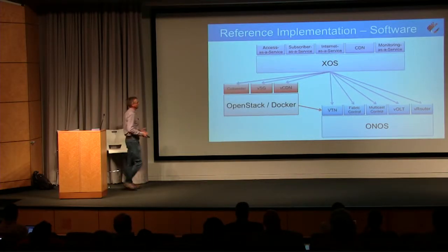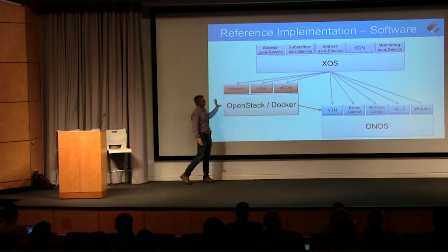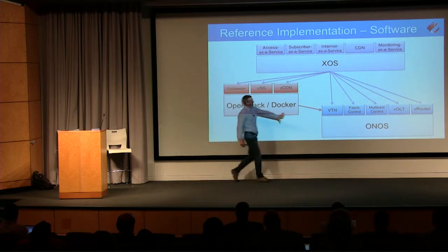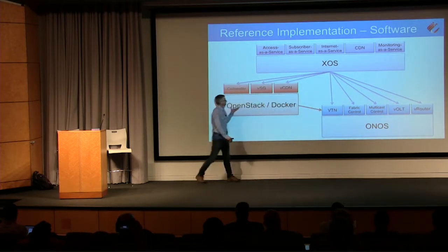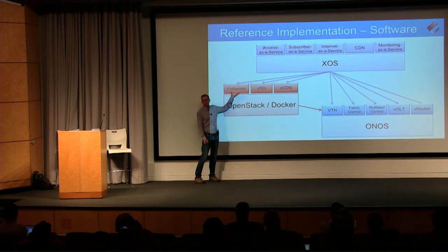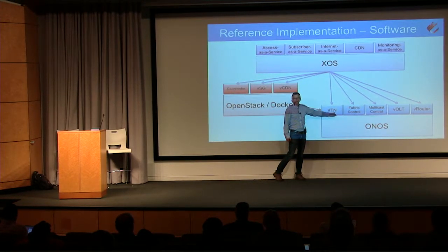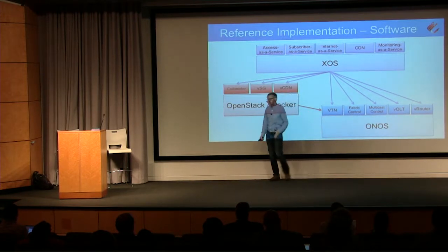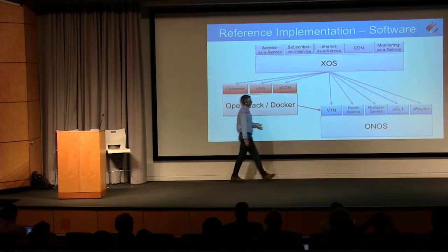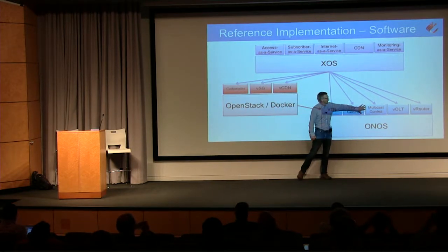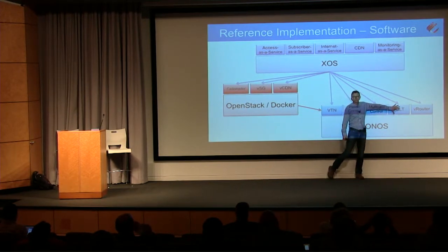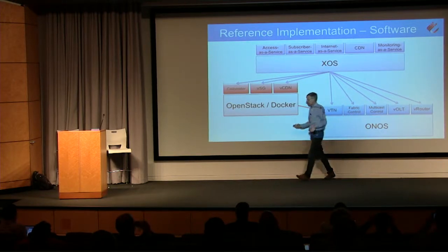The other part is the software, best thought of in terms of a software stack with three basic pieces. First, virtual machine and container management — compute as a service — where you can grab VMs or containers and load them with whatever image you want. Second, network as a service, where you load apps onto ONOS, which is basically a platform as a service. You load control apps to manage virtual networks, the fabric, white box access devices, and to create virtual routers.